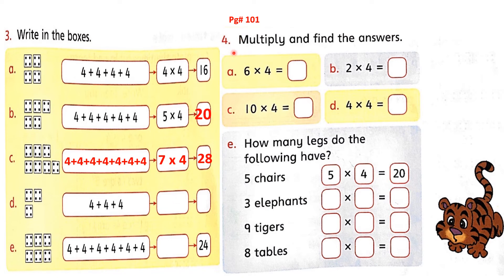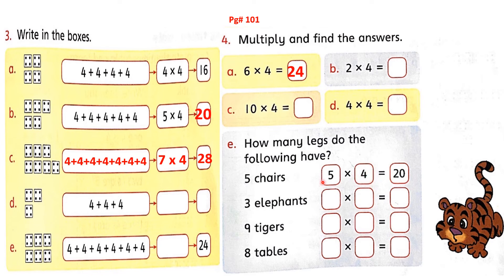Now move to question number 4. Read the table here — 6 fours are. Read the table of 4, because you have not written the table of 6 in your notebook — no problem. Read the table of 4: 4 sixes are 24. Next, question number E — how many legs do the following have? How many legs have 5 chairs? First we will write in multiplication the number of groups — there are 5 chairs, so we write number 5 first. How many legs does 1 chair have? Yes, 1 chair has 4 legs. We will write number 4 here. Read the table: 5 fours are, or 4 fives are — the answer we get is 20. So 5 chairs have a total of 20 legs.